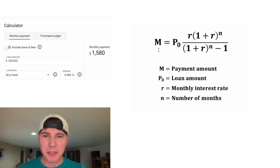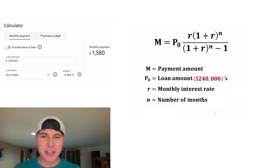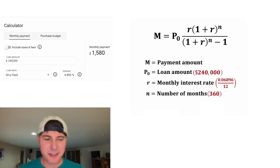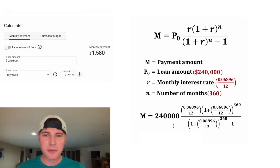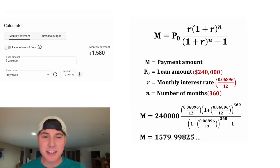Here's the formula to find the monthly mortgage payment given a loan amount, a monthly interest rate, and a number of months. Let's check the calculator. For the loan amount we have $240,000. For the monthly interest rate, we're going to take that 6.896 and divide it by 12. And the number of months for 30 years is 360. After we plug all this into a calculator, we get $1,579.99825, and rounding to the nearest cent gives us exactly $1,580. So the calculator must be using this formula, and it used it correctly.